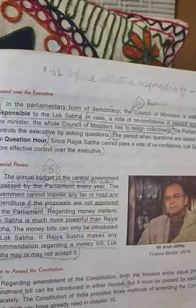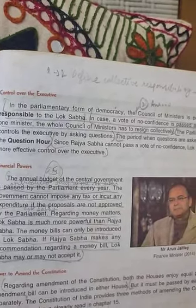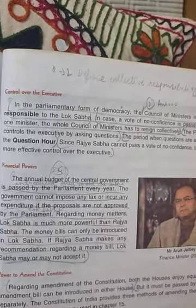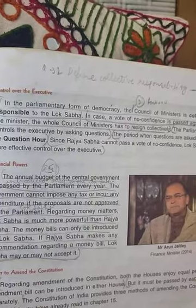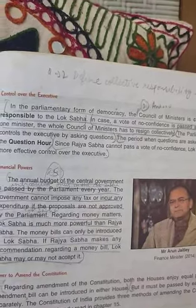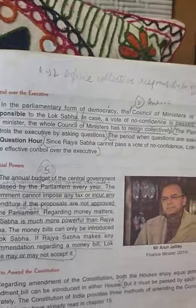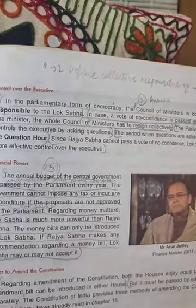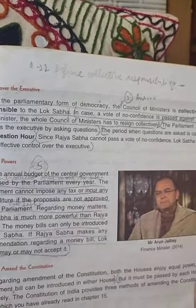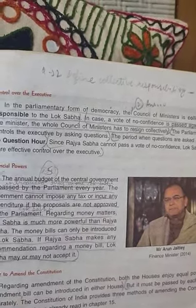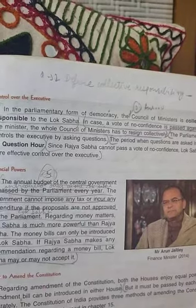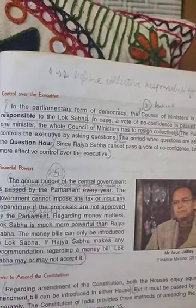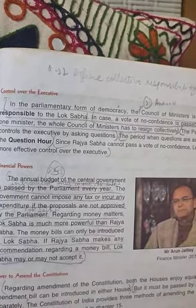The Parliament controls the executive by asking questions. The question hour is when Parliament exercises this control. Since Rajya Sabha cannot pass a vote of non-confidence, Lok Sabha has more effective control over the executive.